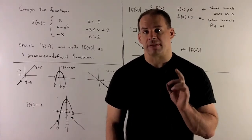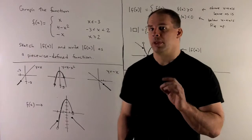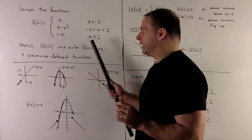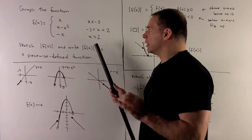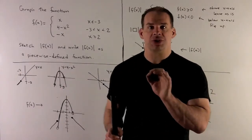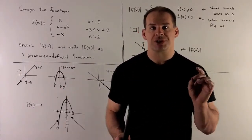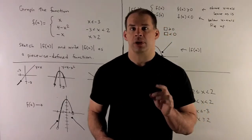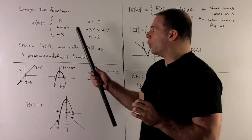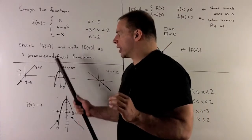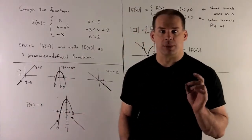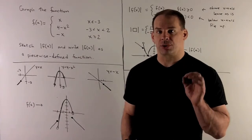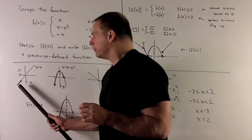First, sketch the graph of f(x). We have a piecewise defined function with three pieces, so we're going to sketch the graph of each, mark off the regions of interest, and then put everything together in a single final graph. The first piece is y equals x — a straight line through the origin with slope equal to 1. We only want the piece where x is less than or equal to minus 3, so we'll darken that in.